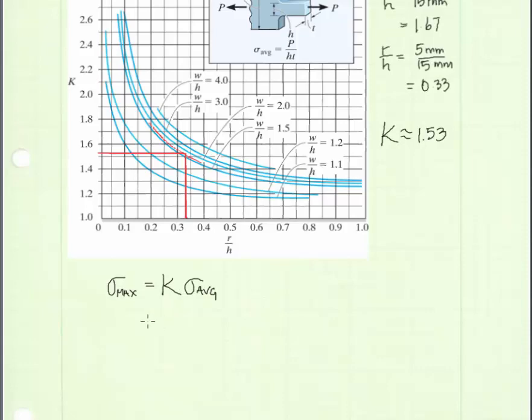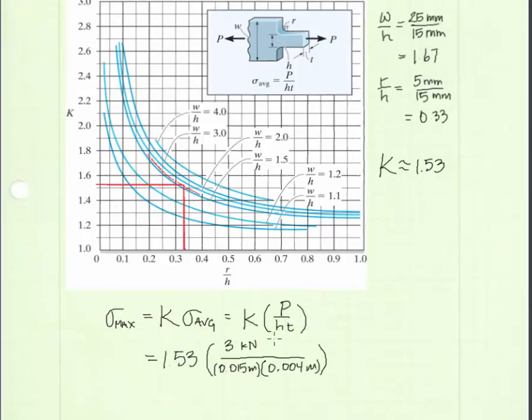K is the value we just found. For our problem, we can substitute in for P, 3 kilonewtons, H is 0.015 meters, and the thickness is 0.004 meters. And we can solve for maximum stress, which is 76.5 megapascals. And we're done.